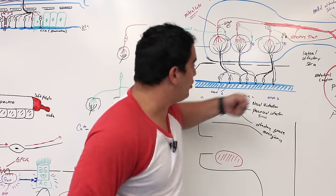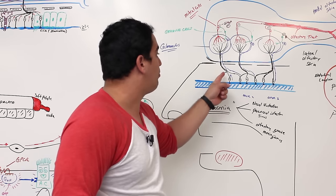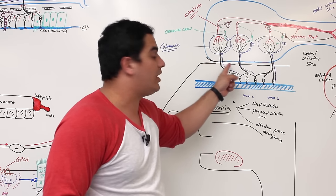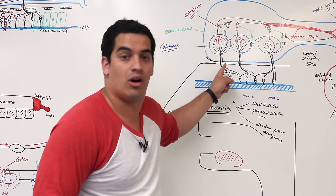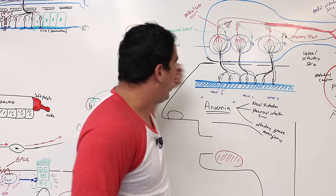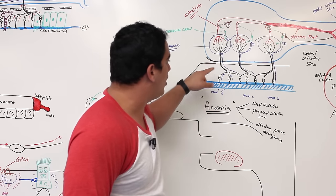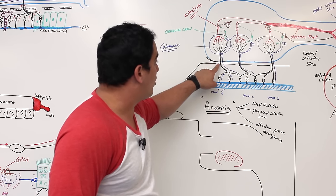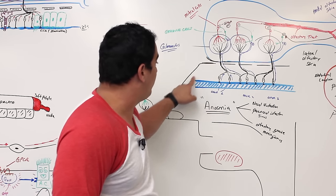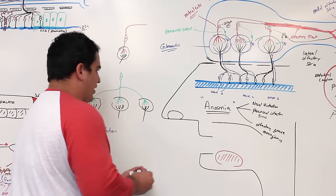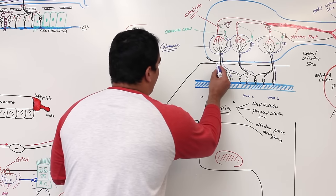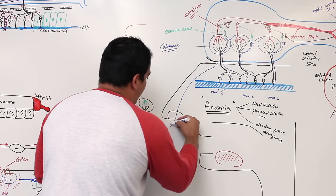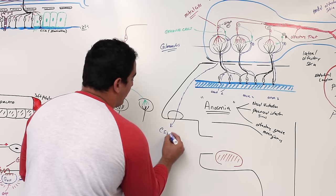Another cause is trauma — for example, a fracture that breaks the cribriform plate of the ethmoid bone and lacerates some of these nerves. Also, since the space is connected to the subarachnoid space, cerebrospinal fluid can actually leak out through the nose — a condition called rhinorrhea.